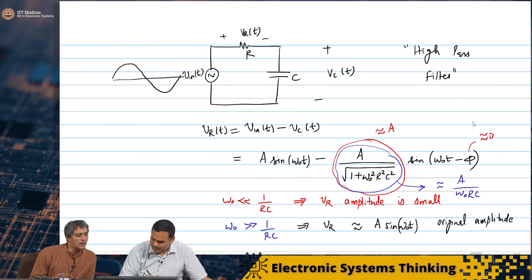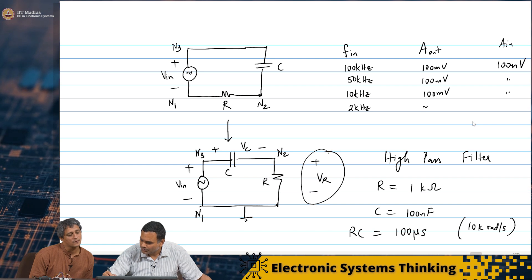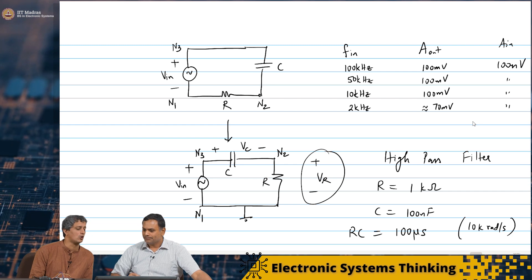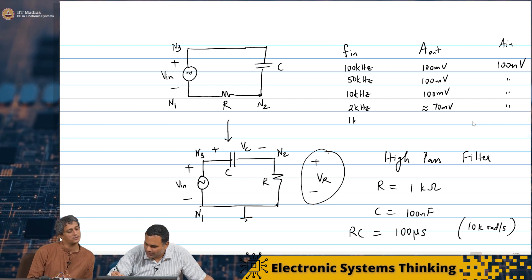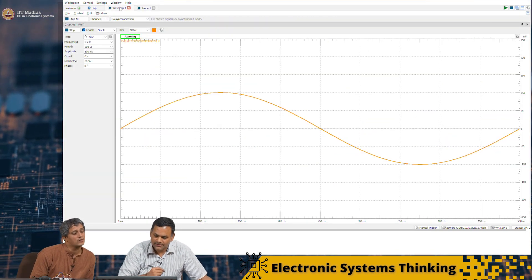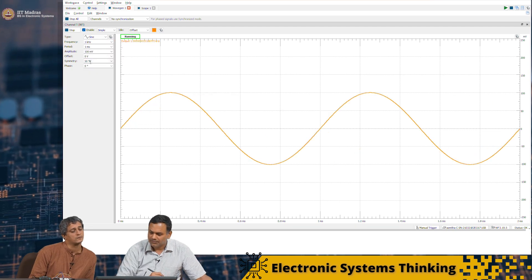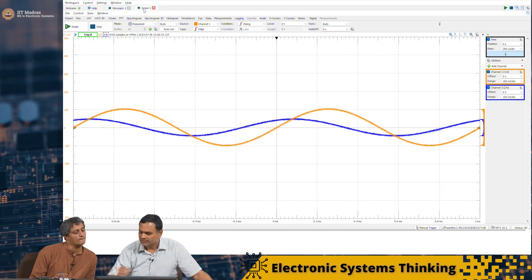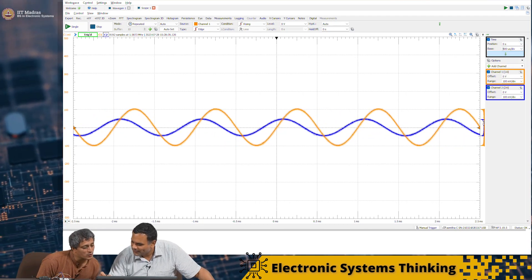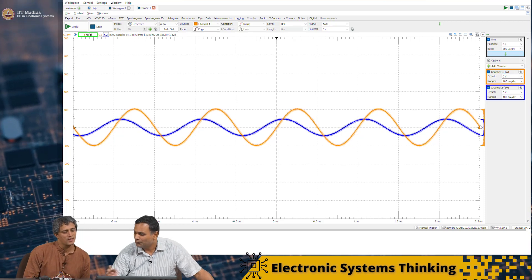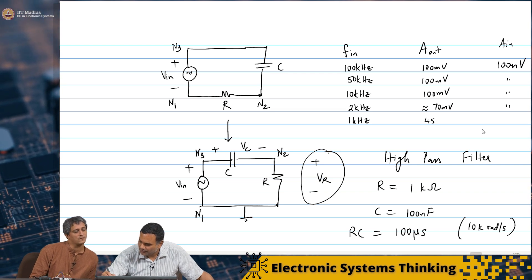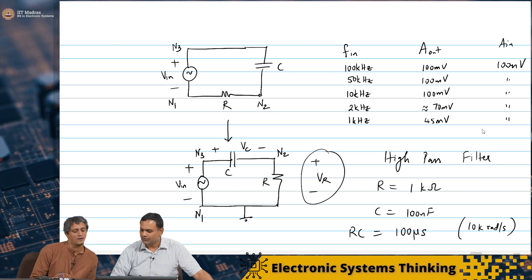So let's go back there. 70 millivolts. The input is still 100. Now make it 1 kilohertz. Let's make it 1 kilohertz. This is now significantly lesser. I can see - it's dropped. It's dropped actually below half. Maybe 0.45. Let's put that down. So 45 millivolts. Input amplitude is the same.